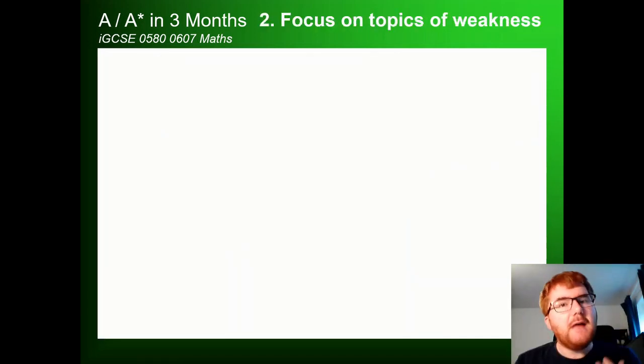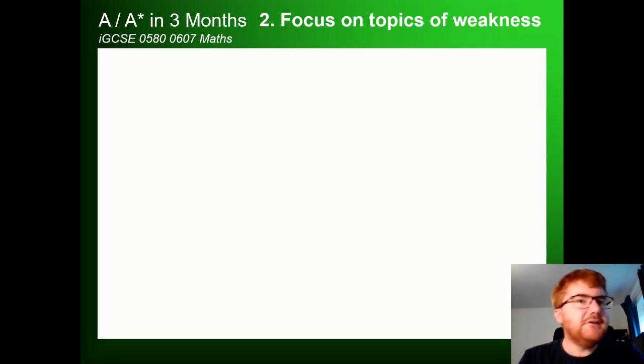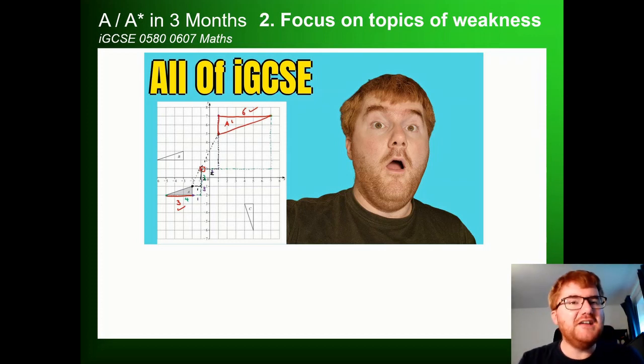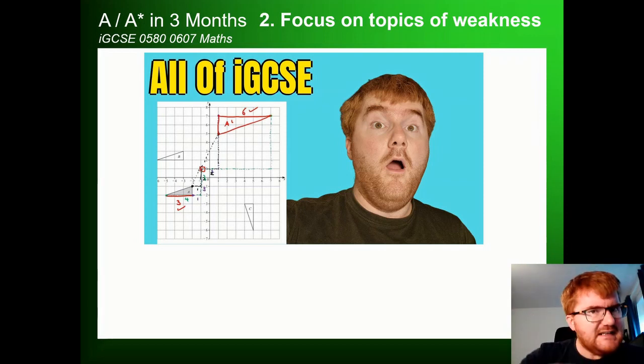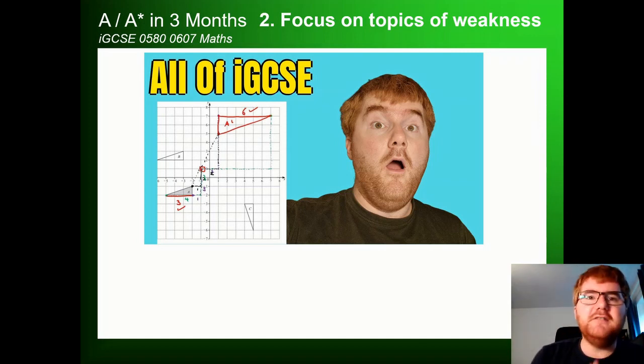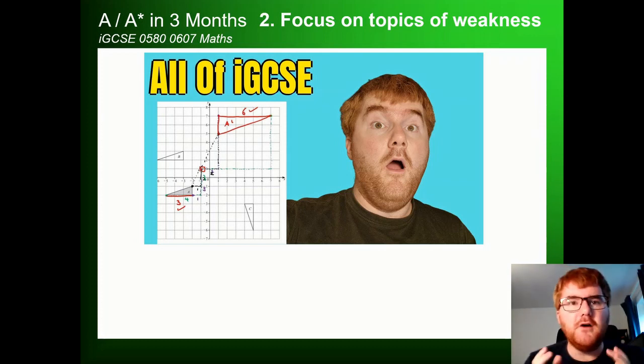Now, once you've done that process, then it's looking and focusing on those topics of weakness. So say, for example, you struggle with the transformations topic, which comes up a lot on both courses and on paper four. Well, I've done the hard work for you. I have put together an all of IGCSE transformations video, which goes through about 50 minutes of as many past paper questions as I can find on that particular topic. So this gives you a chance to really go through all the details of that topic, making sure you're really happy and really focused on the style of question they could give you on transformations. So that's number two here, make sure you focus on that particular topic of weakness.